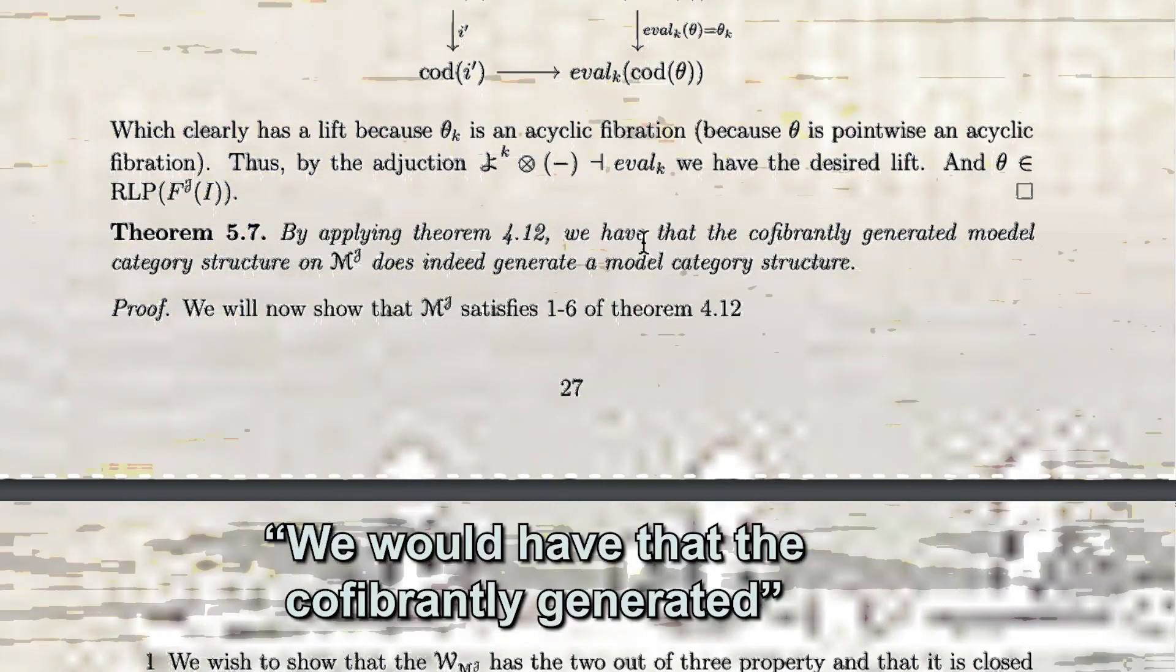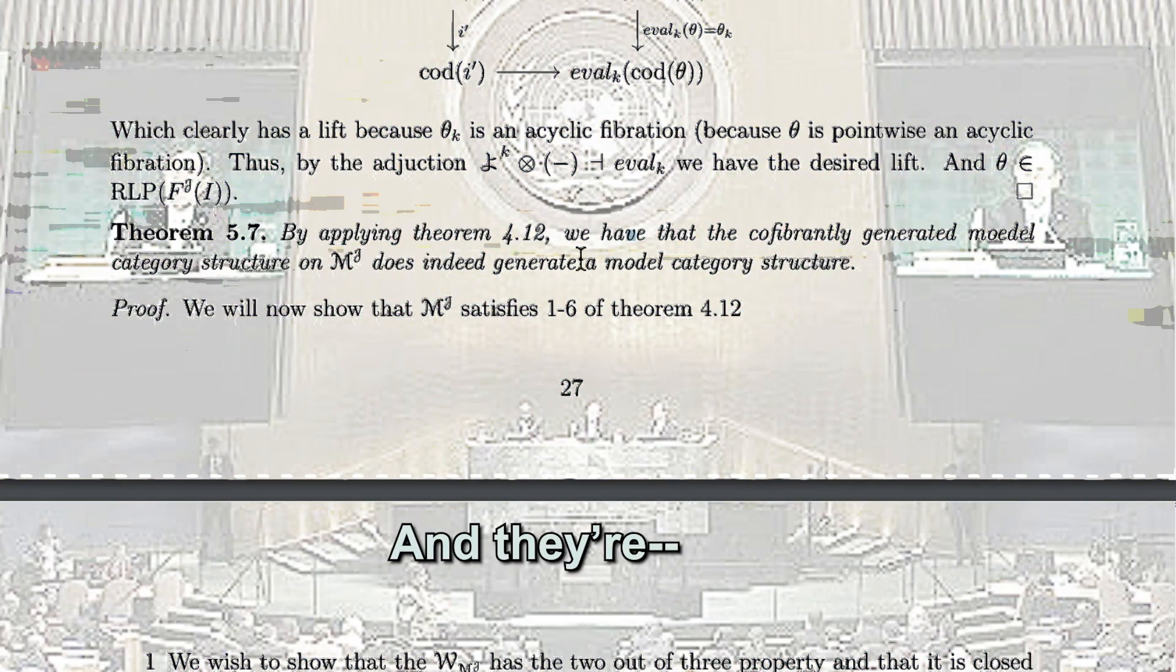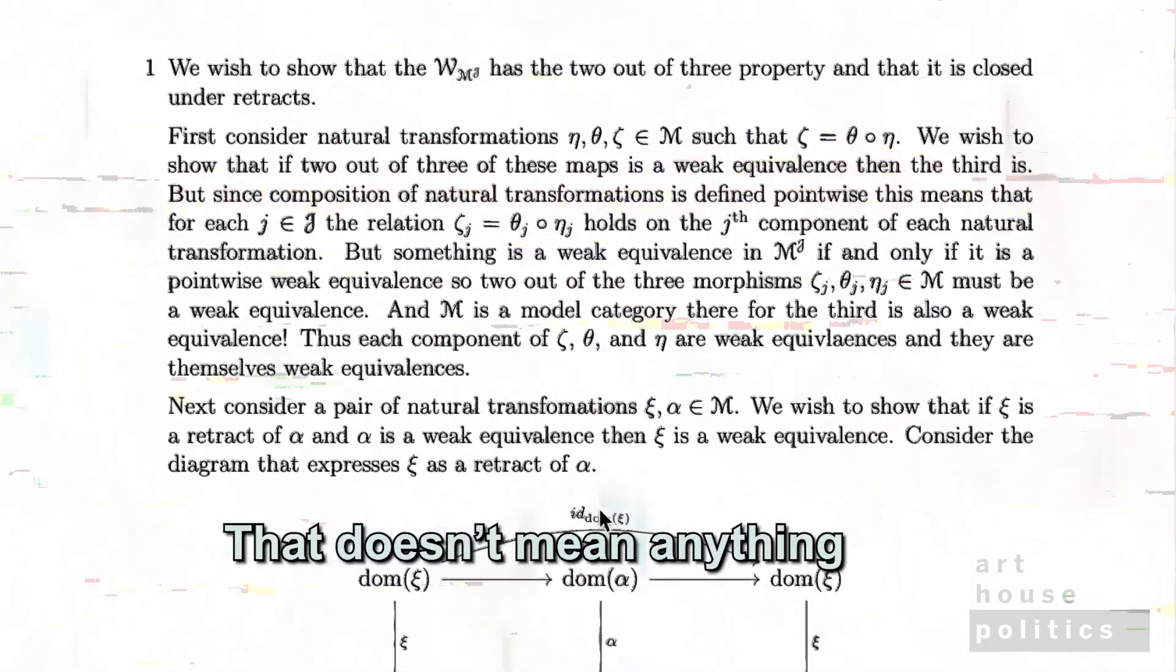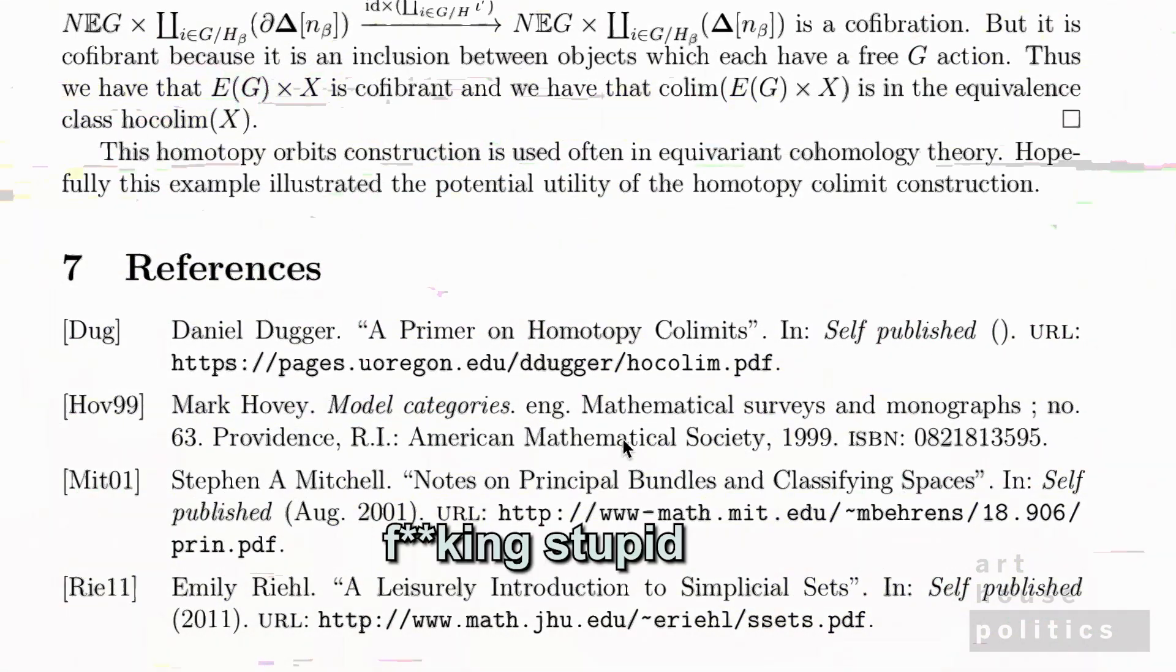Well, we would have that the co-vibrantly generated modal category structure on MJ doesn't degenerate. And Ban Ki-moon at the summit is looking at you like you're an idiot, that doesn't mean anything. I think this is f***ing stupid. No offense.